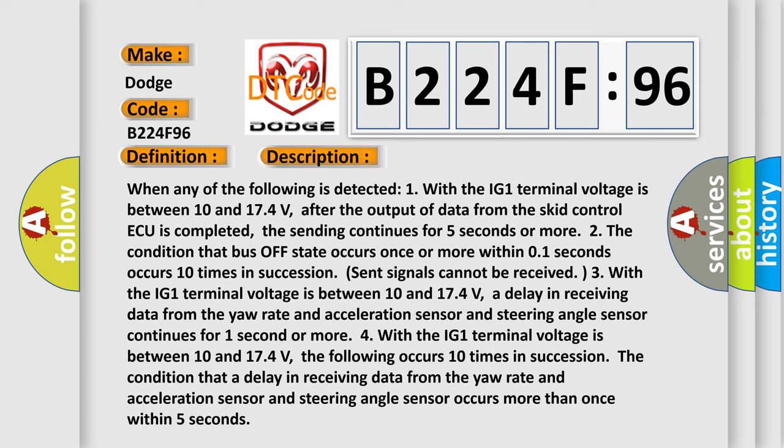Four, with the IG1 terminal voltage between 10 and 17.4 volts, the following occurs 10 times in succession: the condition that a delay in receiving data from the yaw rate and acceleration sensor and steering angle sensor occurs more than once within five seconds.